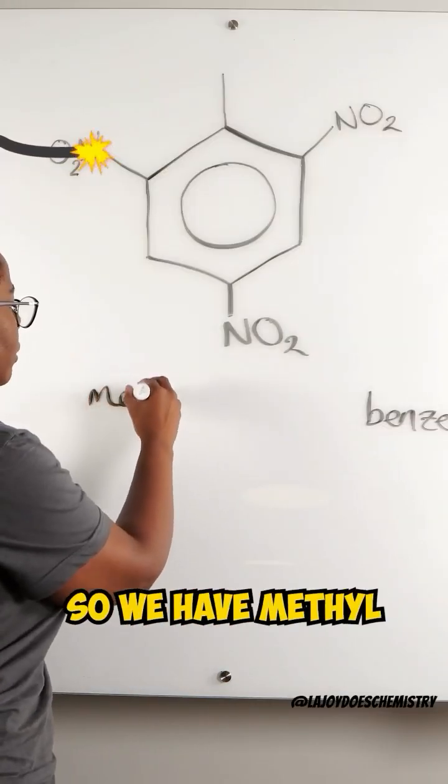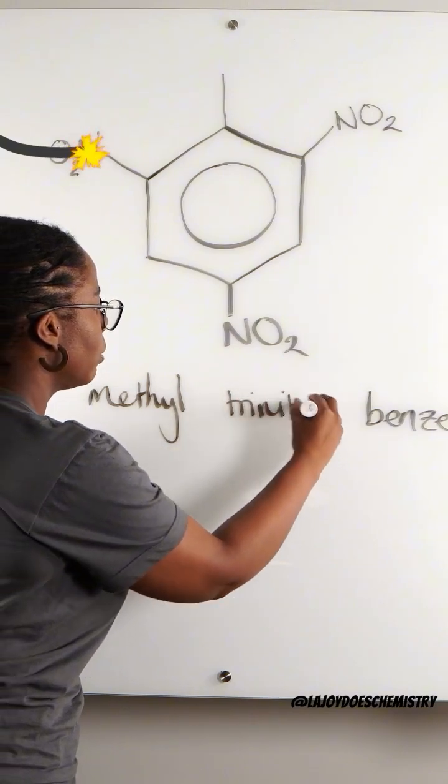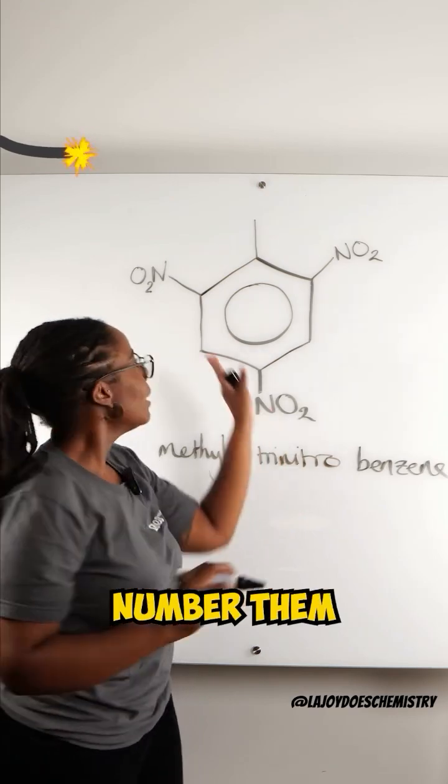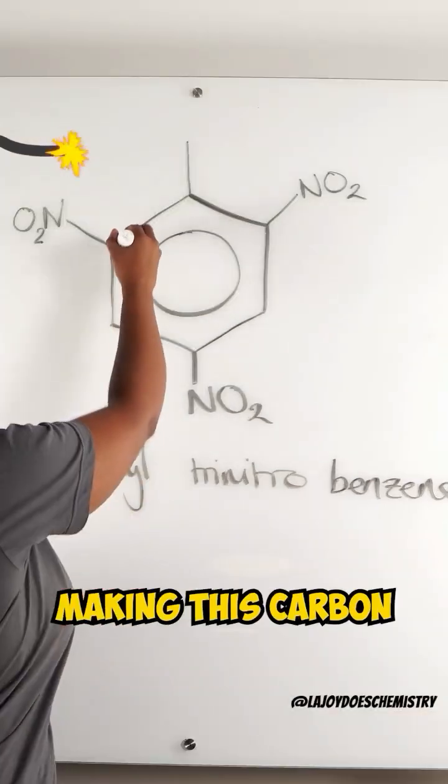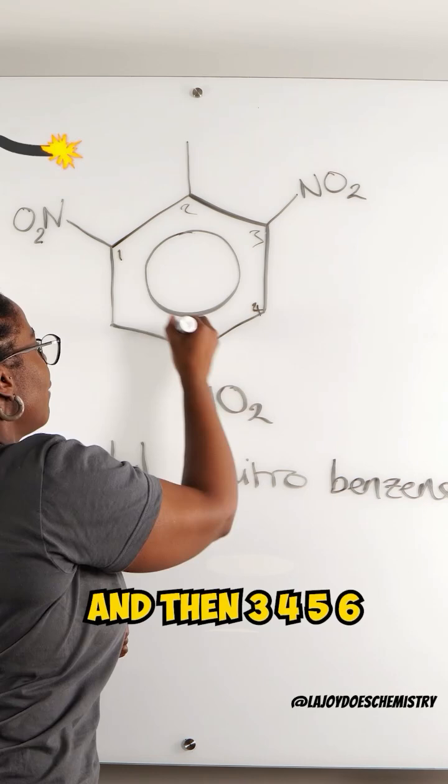So we have methyl trinitrobenzene. And now of course we need to number them. The nitro group has got a higher priority, so we'll get the smallest possible number, making this carbon number one and then three, four, five, six.